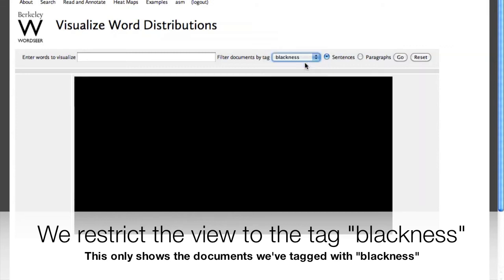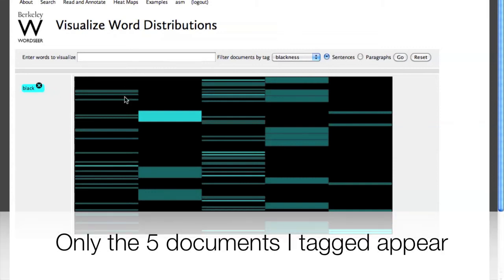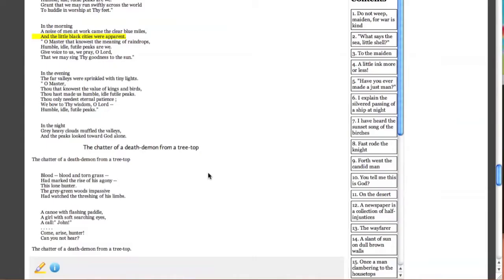Now, I can restrict the heat map columns to just the narratives tagged with blackness. And so, I tagged five of them. And so, only five appear in the heat map.